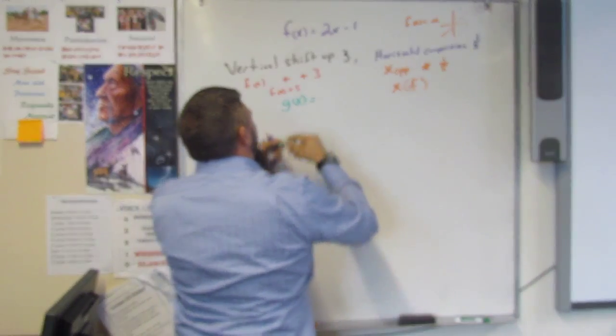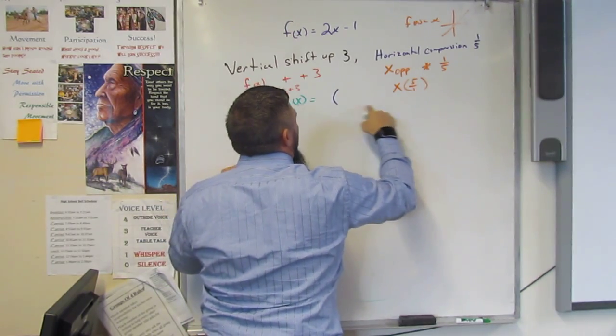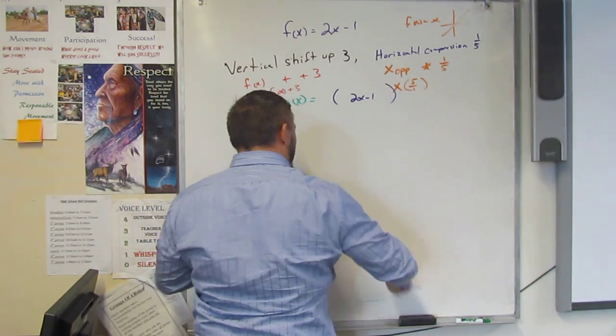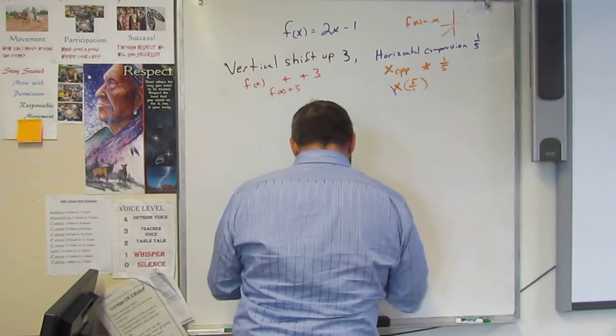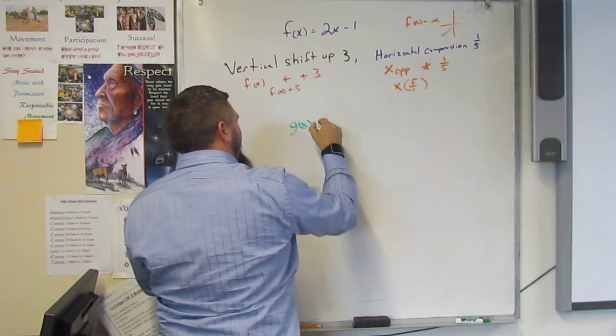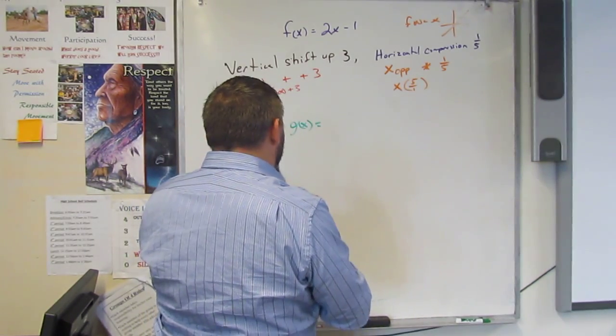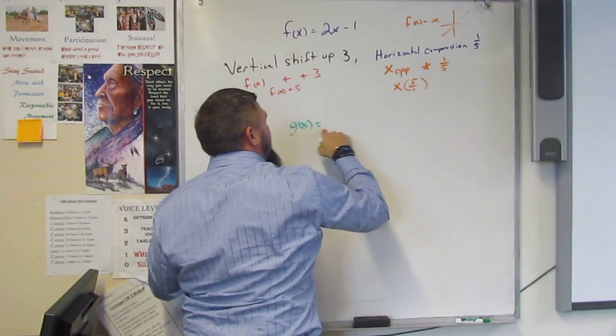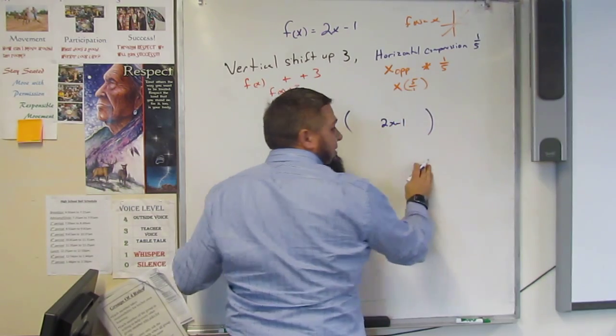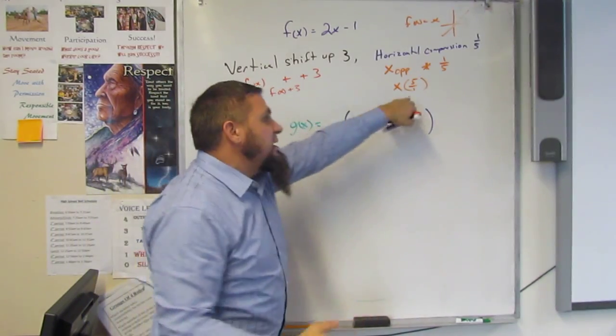Now I can plug these in to this function. The function is space, parentheses, space, 2x minus one, space, and so I'm going to write this so it's actually a good spot. And then I have all the space I need to plug these things in.